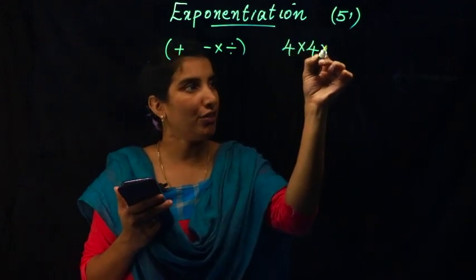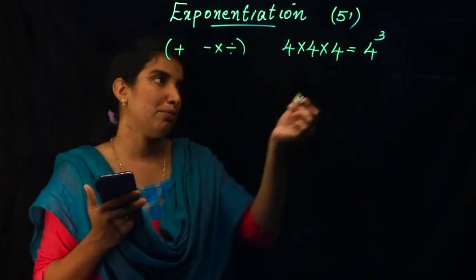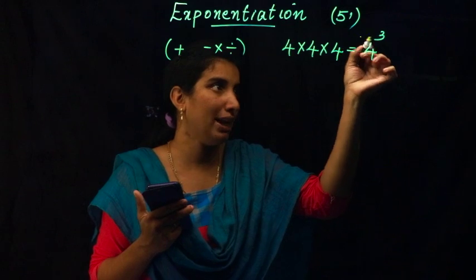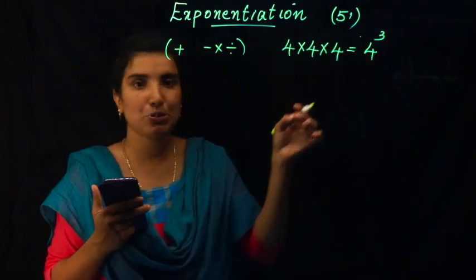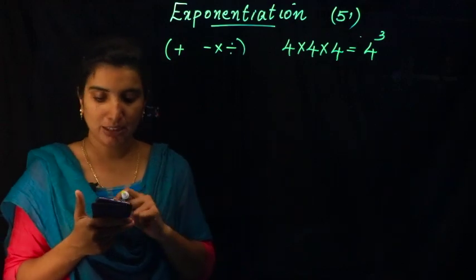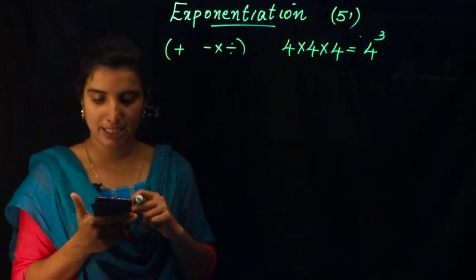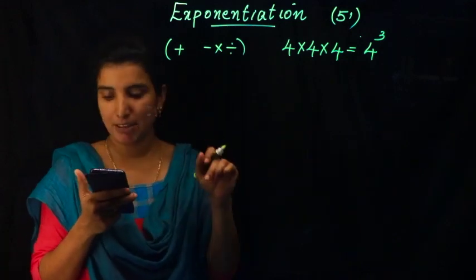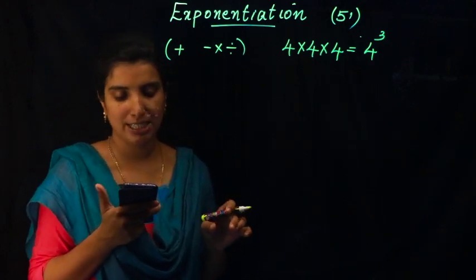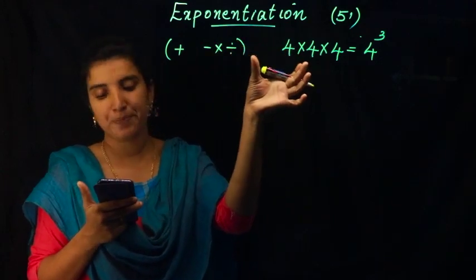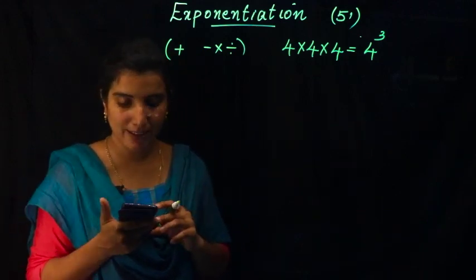We write 4 × 4 × 4 as 4 raised to 3 — writing the 3 in the upper right of the number. Just as the name of repeated addition is called multiplication, the name for repeated multiplication is exponentiation.